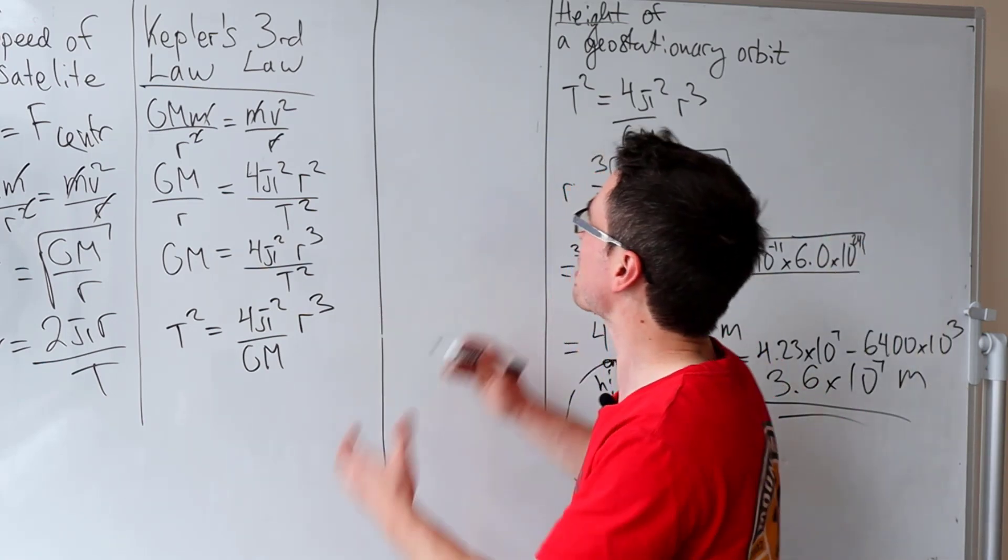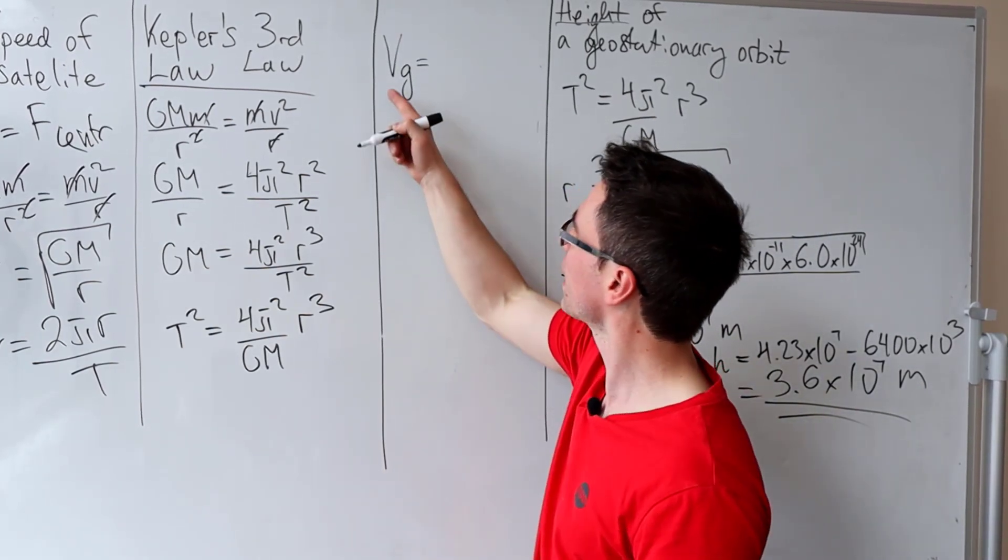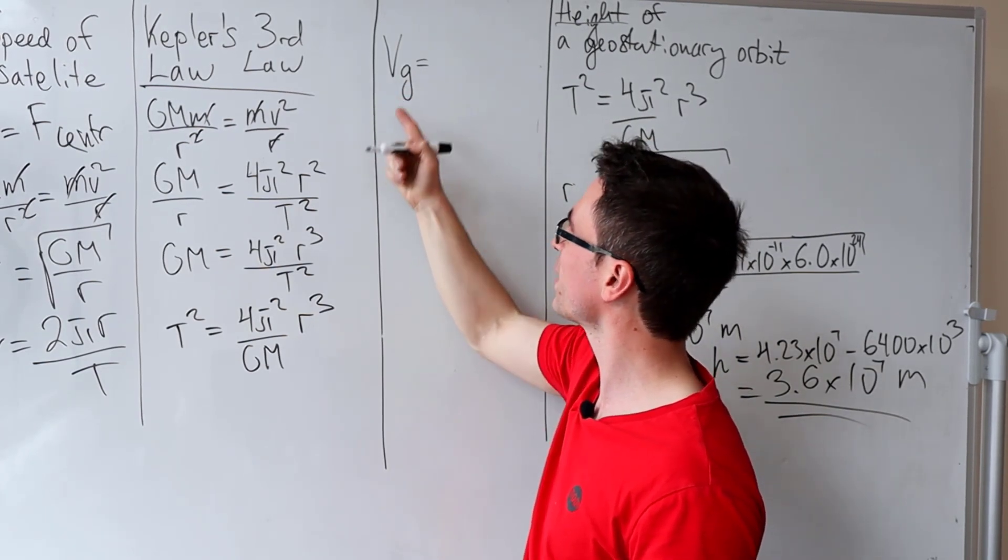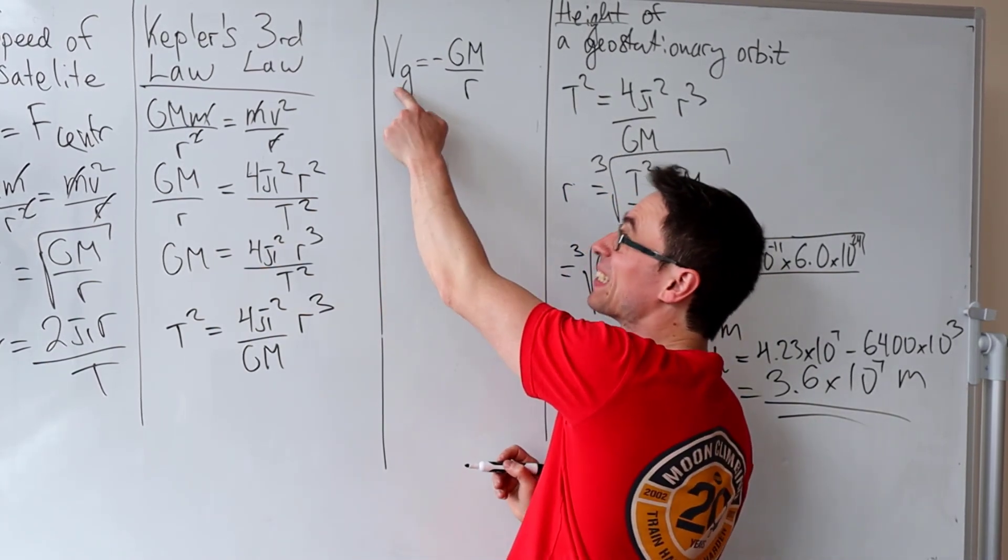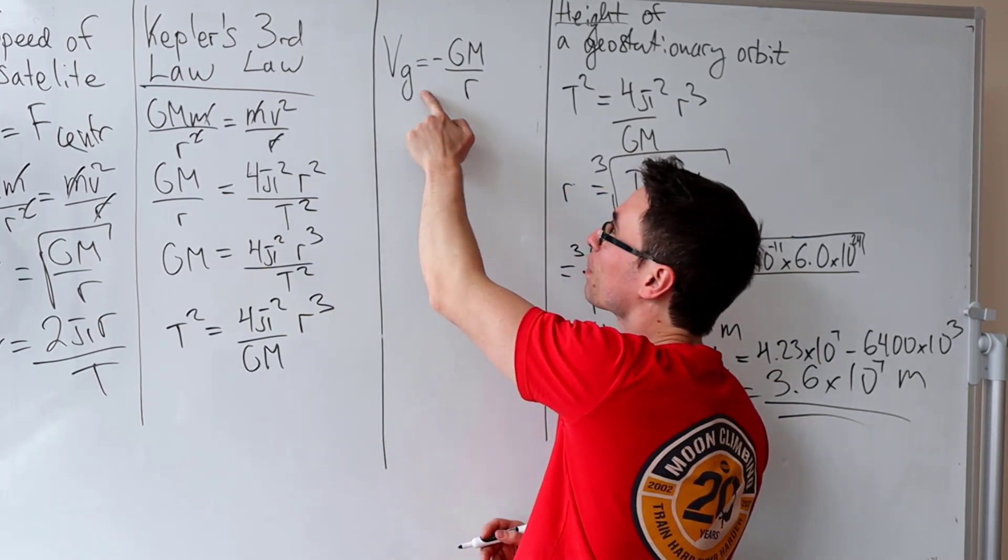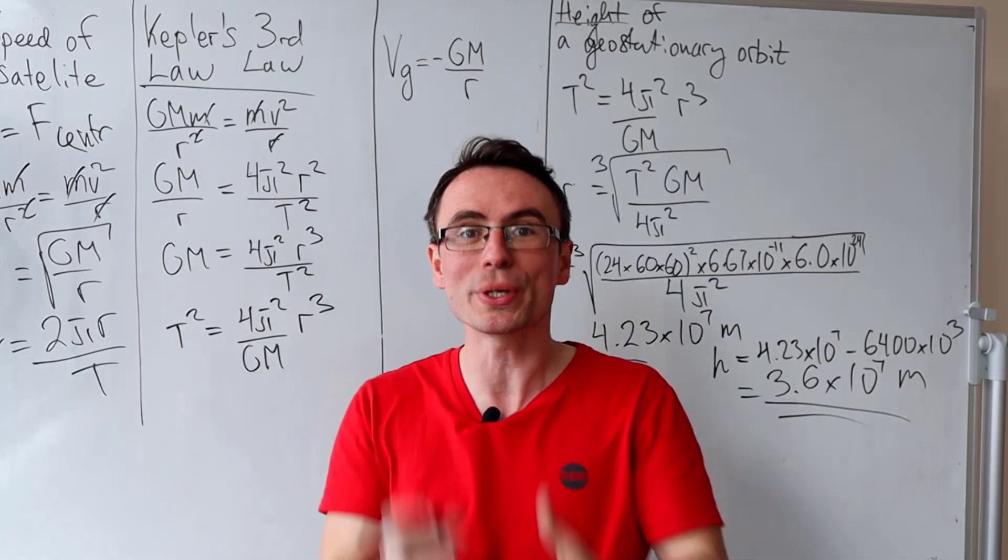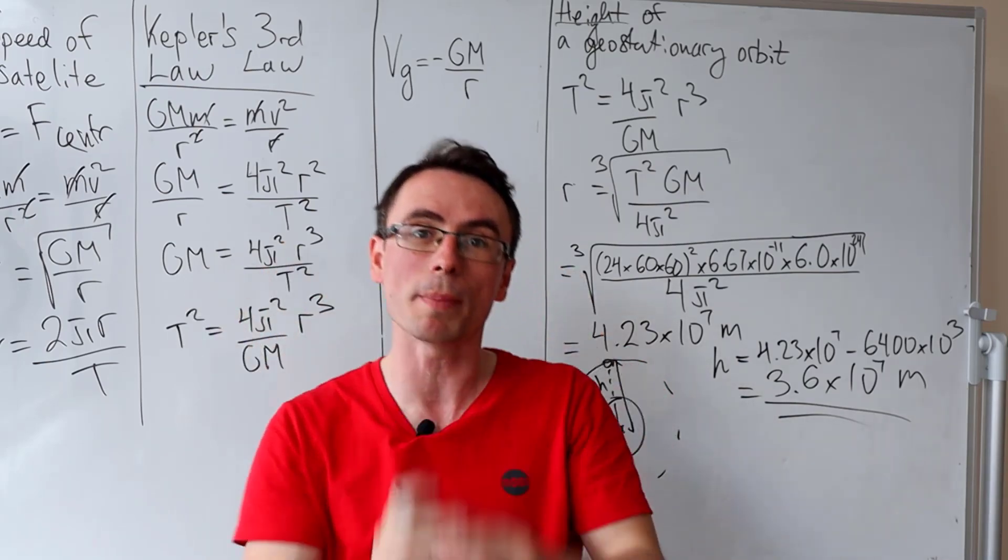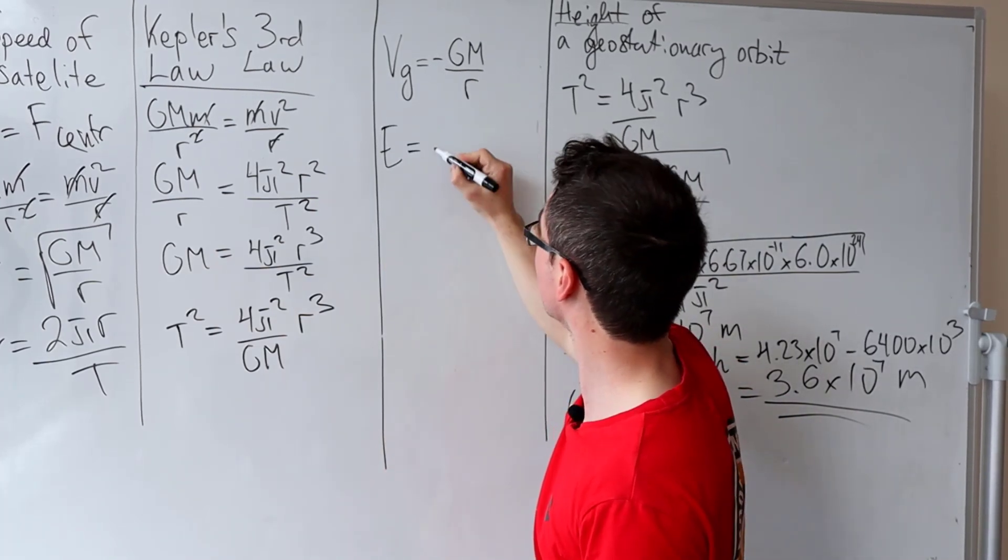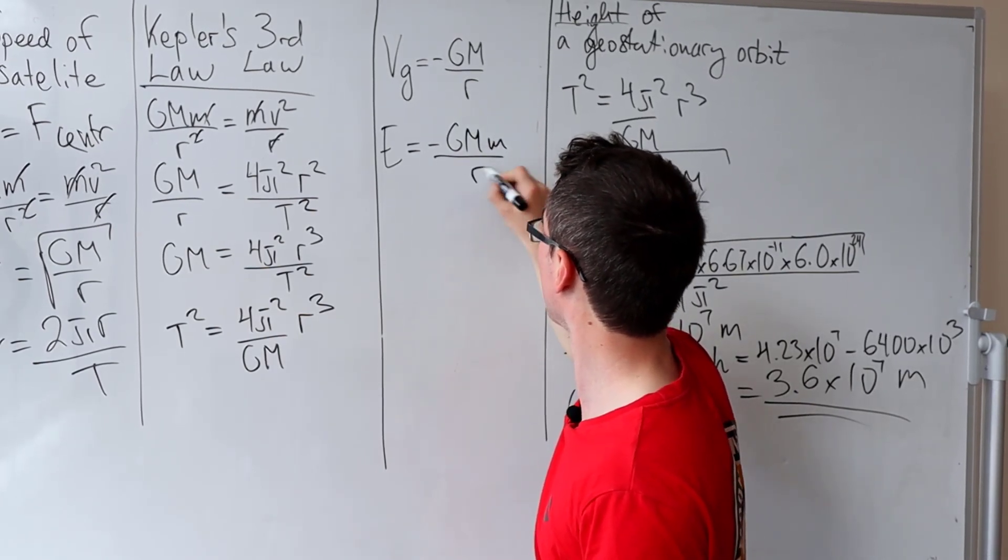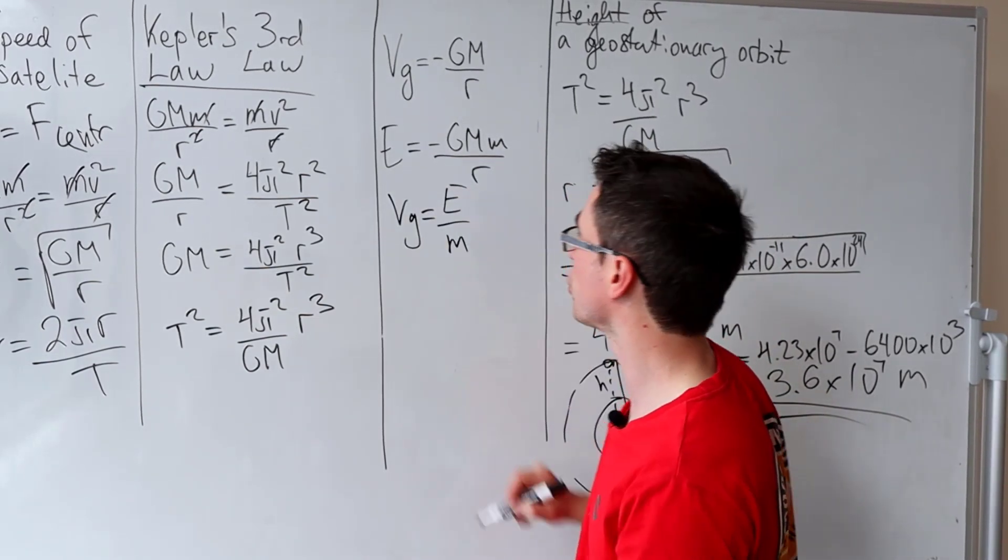Given that we're revising astrophysics, it would be rude not to be revising the gravitational potential. So typically in formula booklets, I think in most exam boards is given with this potential symbol V subscript G, which is given by -GM/R. Now this here is not speed. It's also not V multiplied by G. It's just a subscript gravitational potential. It is defined as the work done to bring a unit mass from infinity to a point in a gravitational field. Because the gravitational potential energy is given by -GM/R, the gravitational potential really is just the energy per unit mass.